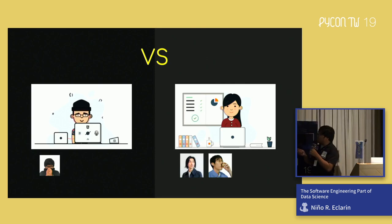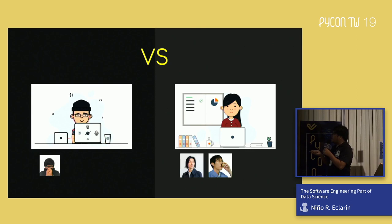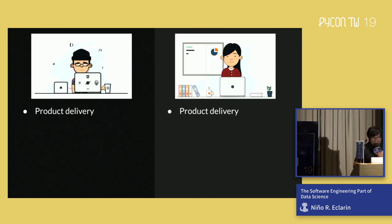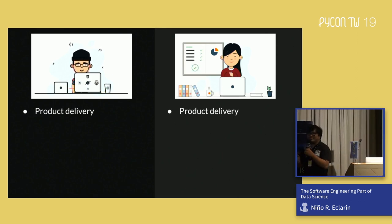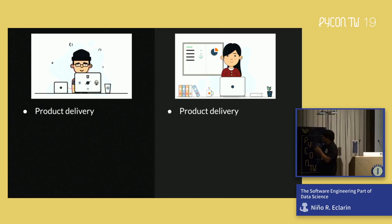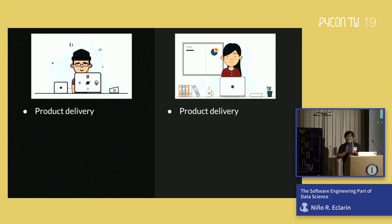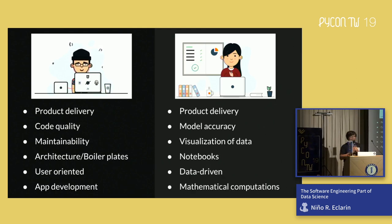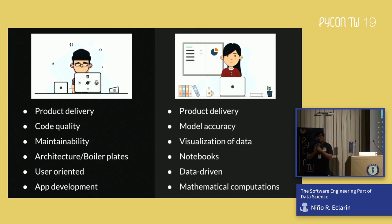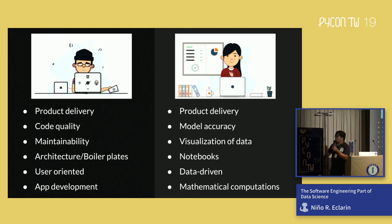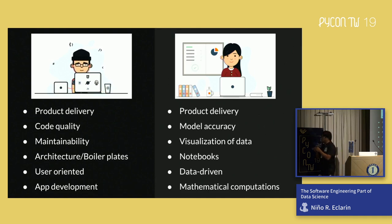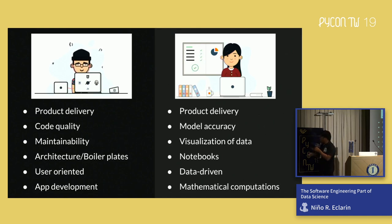Just a brief context: software engineer, data scientist, Nins, office mates that are data scientists. What are the similarities between us? Software engineers and data scientists all have one goal in common — to deliver an output. Product delivery, that's the main goal. But unfortunately we have a lot of differences. Software engineers focus on code quality while data scientists focus on model accuracy. Software engineers deal with maintainability, use boilerplates, define architecture, are user-oriented, and focus on app development. Data scientists want to visualize data — data is everything — and focus more on mathematical computations.